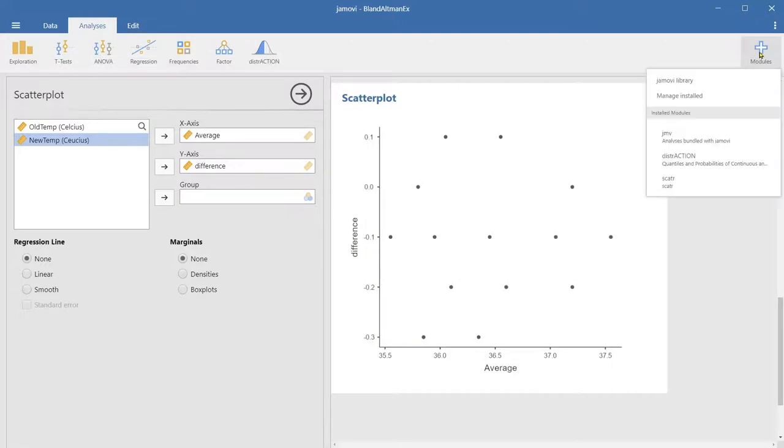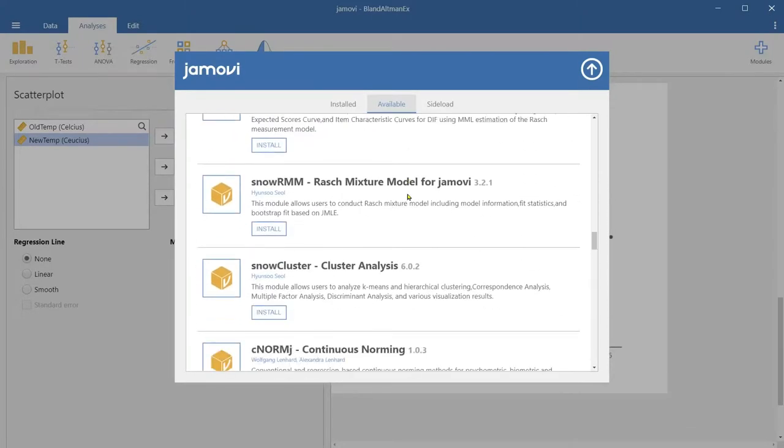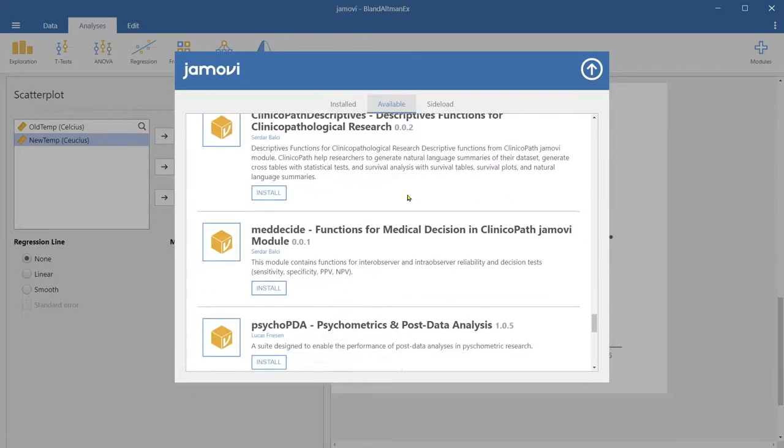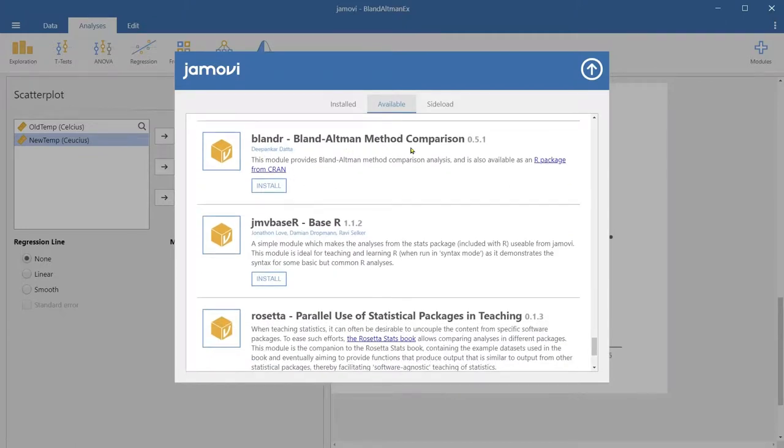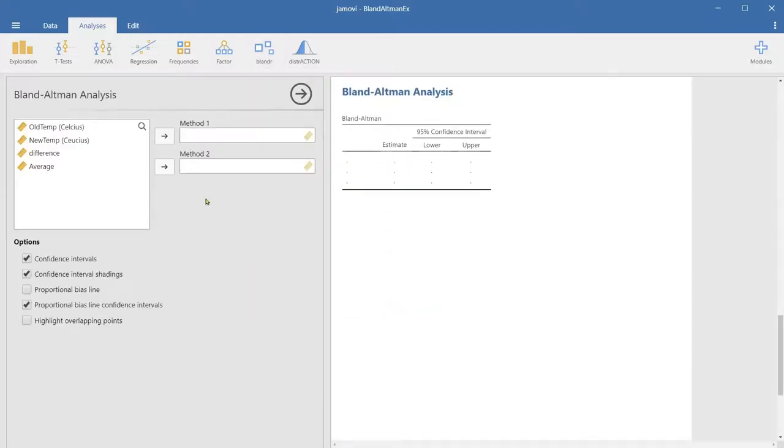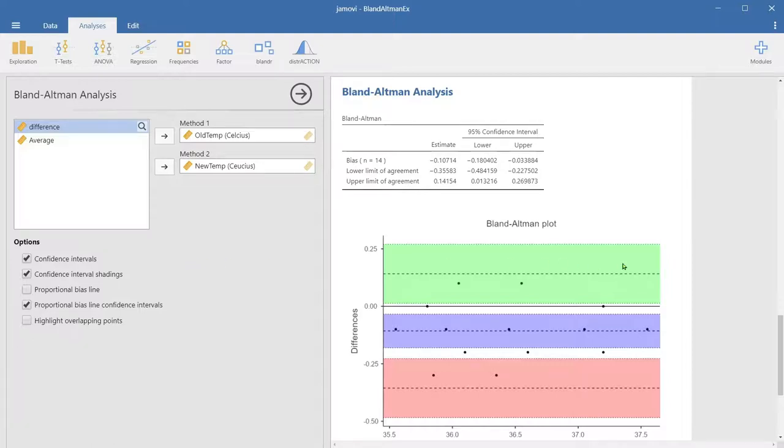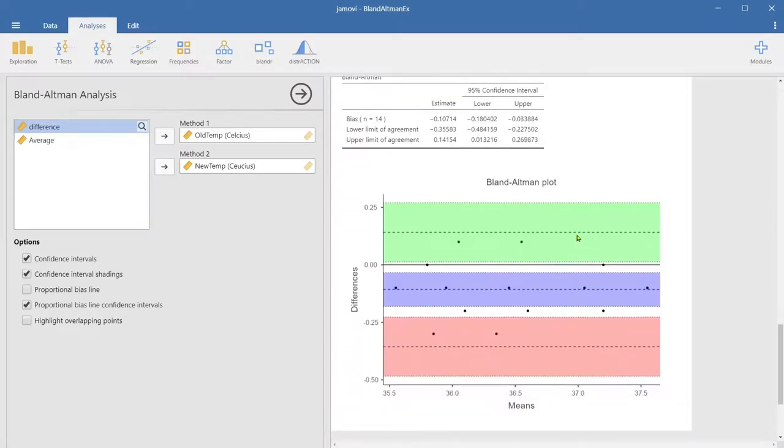Here the module is. Go to Jamovi library and if you scroll down, here is Bland-Altman method comparison. Just click install. Voila. Now you can use Bland-Altman. Click Bland-Altman and Bland-Altman analysis. We do not need to calculate the difference and average this time with the Bland-Altman module. You just move method one, method two, then it'll calculate and generate the other statistics and the plot for you.